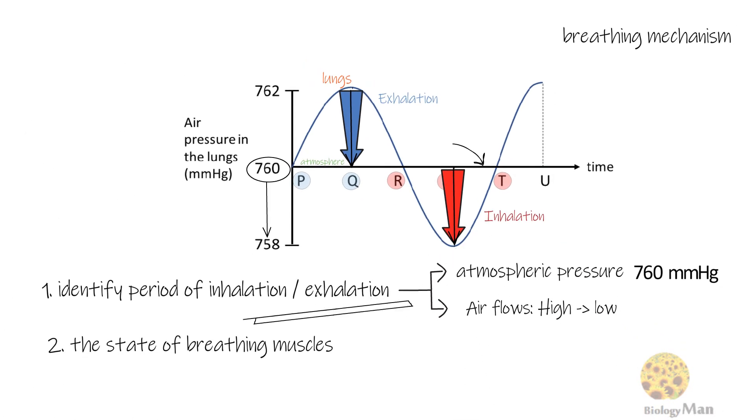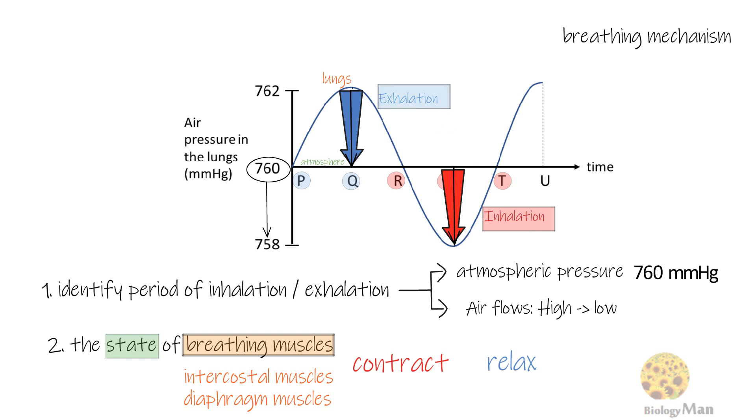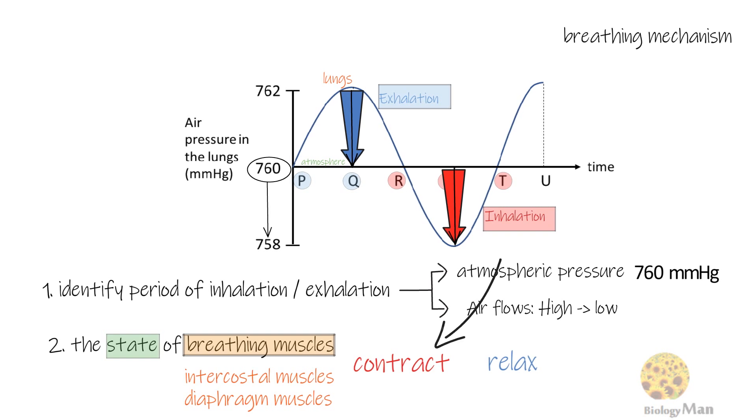The other common type of question asks for the state of breathing muscles in a period of time. The breathing muscles are intercostal muscles and diaphragm muscles. Bear in mind, there are only two states of muscles, either contract or relax. After you identify in the graph which period is inhalation or exhalation, you should find it easy to answer these types of questions. Breathing muscles contract during inhalation and relax during exhalation.